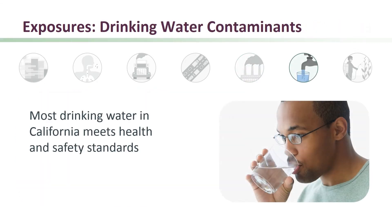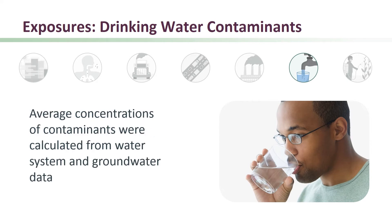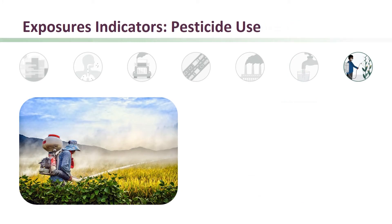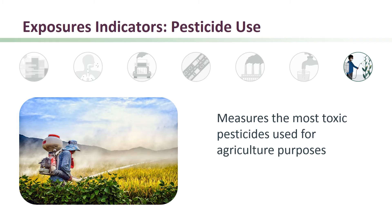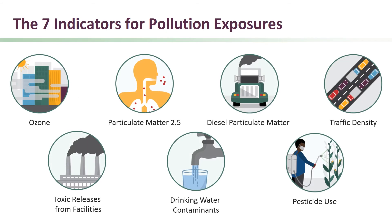While most drinking water in California meets health and safety standards, sometimes water can become contaminated with chemicals or bacteria. The drinking water contaminants indicator includes both natural and human sources of contamination; average concentrations of contaminants were calculated from water system and groundwater data to create the indicator. Finally, the pesticide use indicator measures the most toxic pesticides used for agriculture purposes. These seven indicators represent different potential pollution exposures faced by people in California.